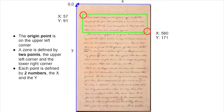Each of these two corners is defined by two sets of coordinates: the X and the Y. For example, the lower right corner has an X of 560 and a Y of 171, while the upper left corner is defined with an X of 57 and a Y of 91. So this is very important — you have to remember that the definition starts from the top corner to the bottom corner.